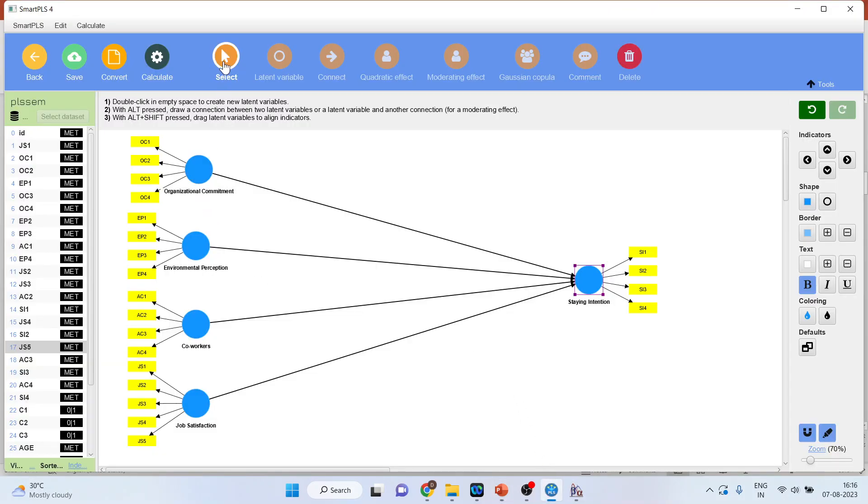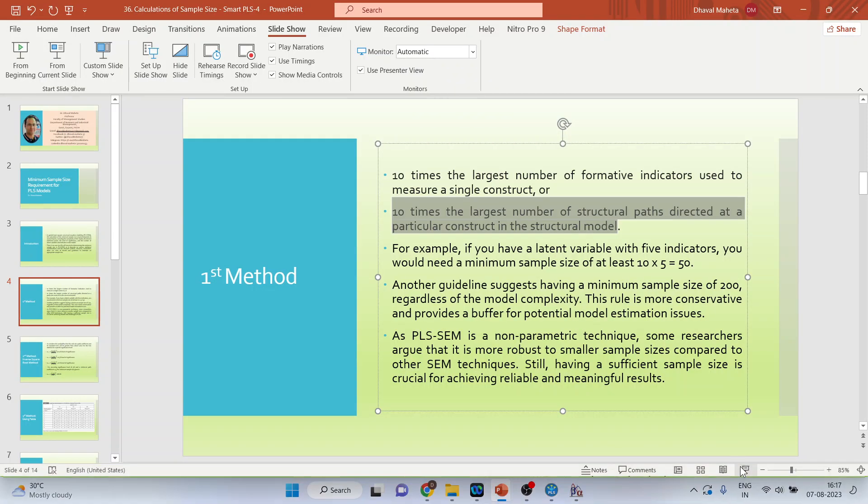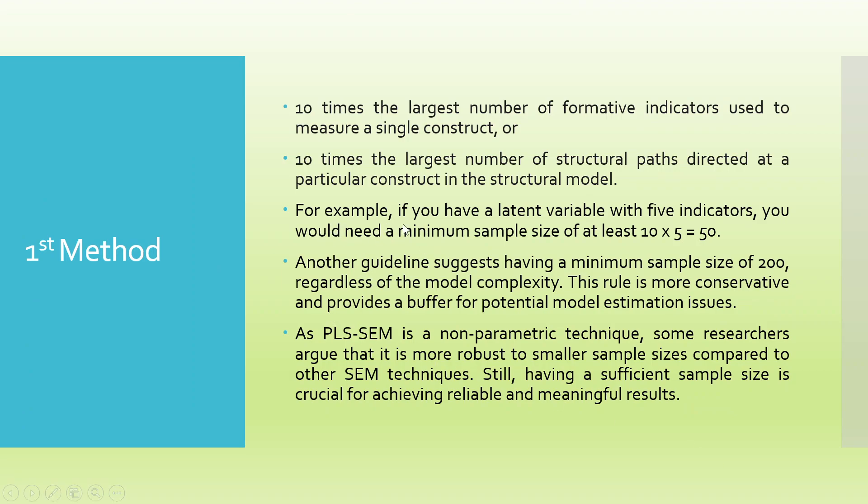In case you are having two endogenous constructs, you will consider the maximum. Here only two arrows are moving inside and here 4 are moving inside, therefore 4 into 10. So an example is given: if you have a latent variable with 5 indicators, you would need a minimum sample size of at least 10 into 5, which is 50. Another guideline suggests having a minimum sample size of 200 regardless of the model complexity. This rule is more conservative and provides a buffer for potential model estimation issues.